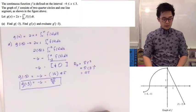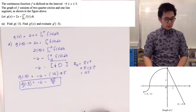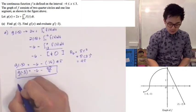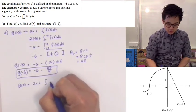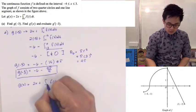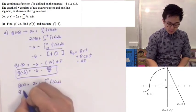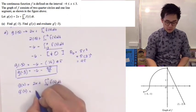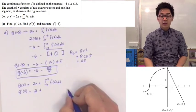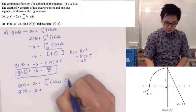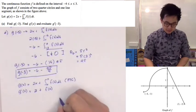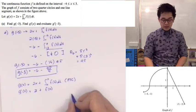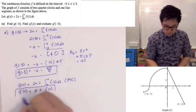The second part is to find g prime of x and evaluate it at g prime of negative 3. Given that g of x equals 2x plus the integral of f of t dt from 0 to x, g prime of x is the derivative of 2x, which is 2, plus the derivative of the integral from 0 to x. Using the fundamental theorem of calculus, that derivative is f of x. So g prime of x equals 2 plus f of x.